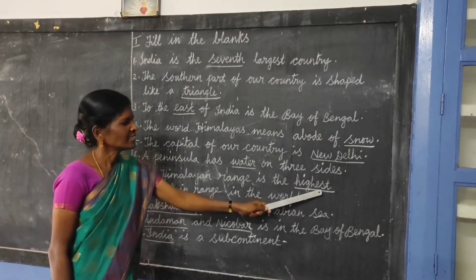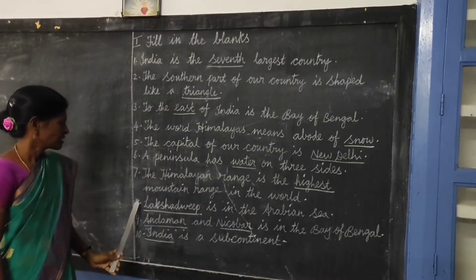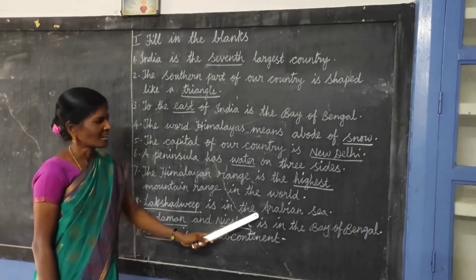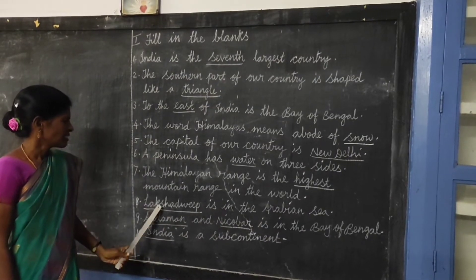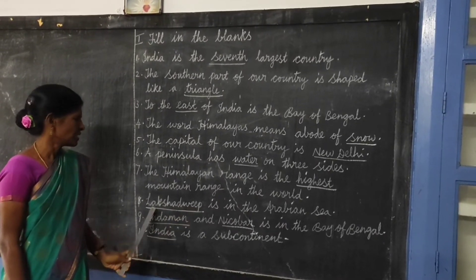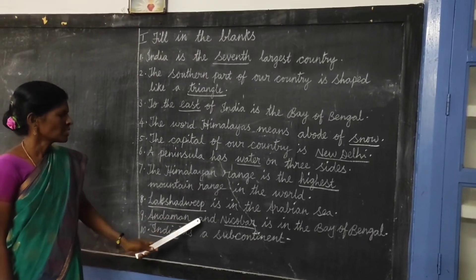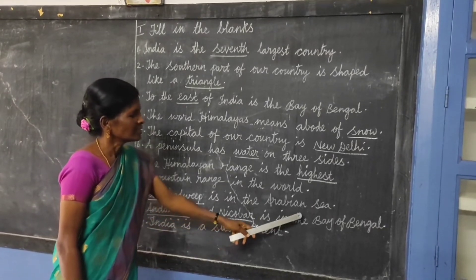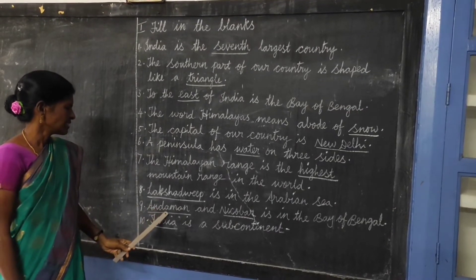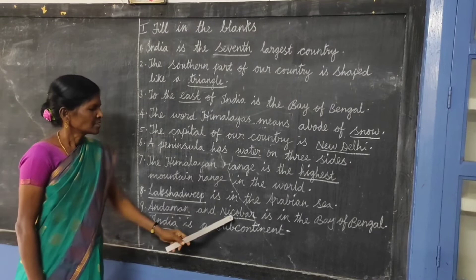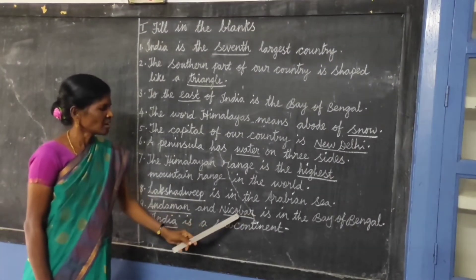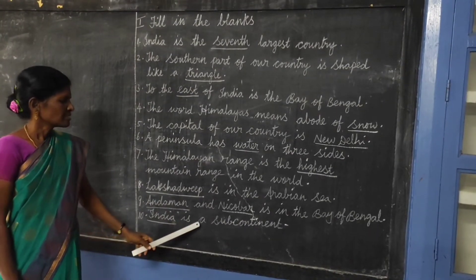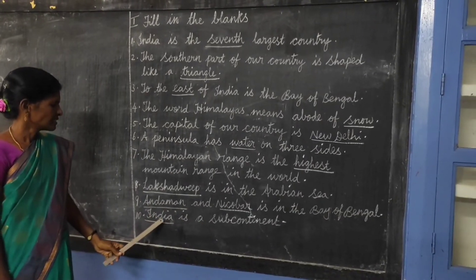Number 6: A peninsula has water on three sides. Number 7: The Himalayan range is the highest mountain range in the world. Number 8: Lakshadweep is in the Arabian Sea. Number 9: Andaman and Nicobar is in the Bay of Bengal. Number 10: India is a subcontinent.